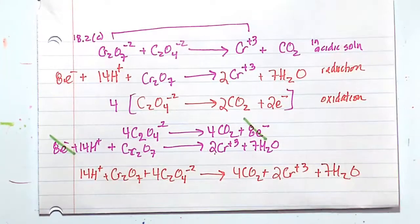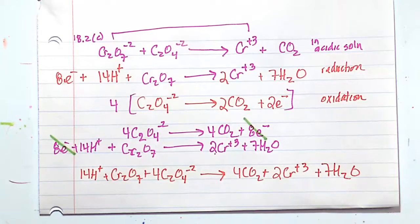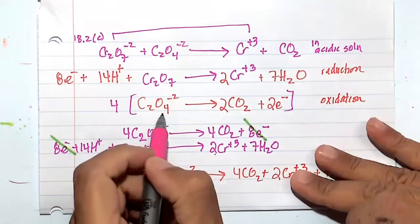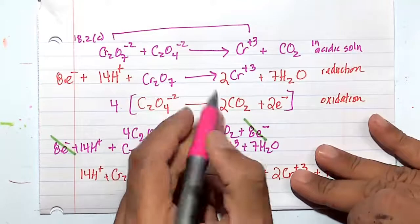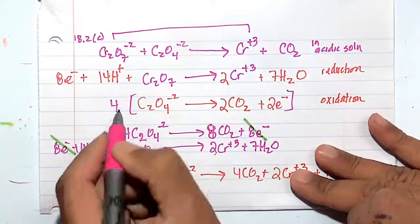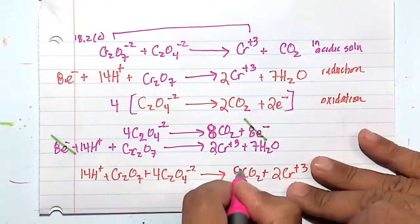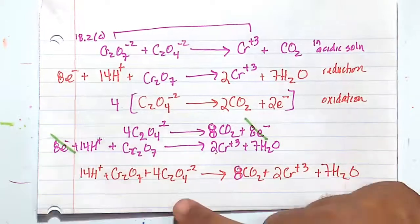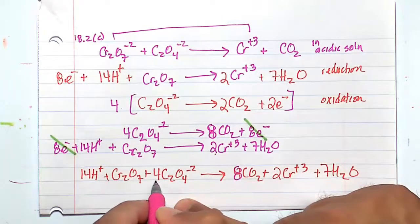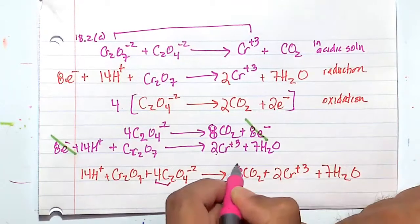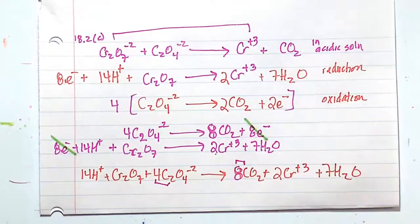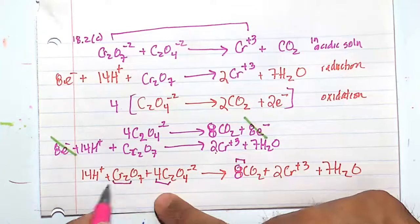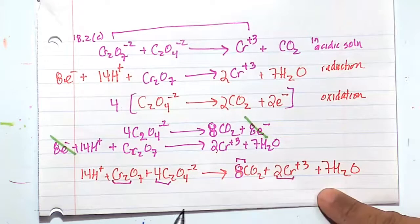All right, so let's make sure that we are balanced. Either way, I do see a mistake here. This should be 4CO2O4 minus. Four times two is eight CO2. And then plus eight electrons. So we actually have an eight CO2 here. And this should balance now. Four times two is eight for the carbons. Eight carbons. So that's good. CR is two CRs. We have two CRs. That's good.